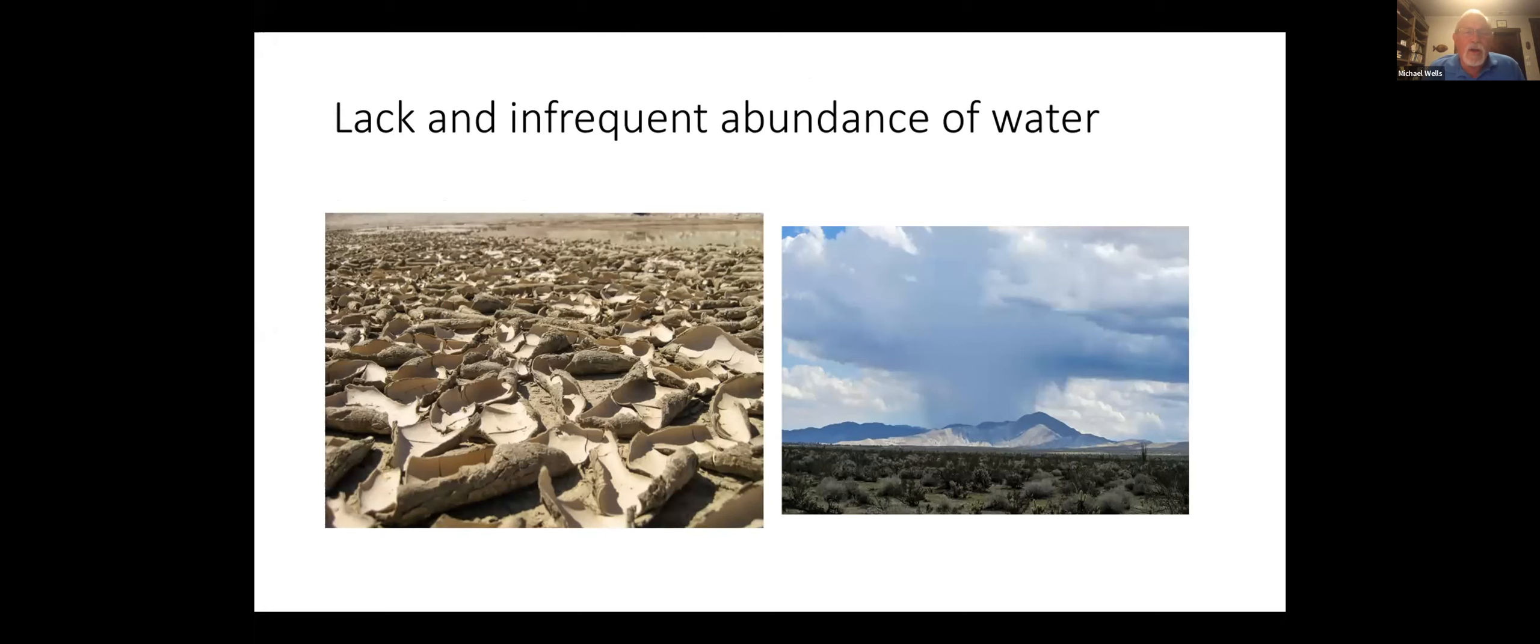Water. Anza-Borrego averages less than about six inches of rainfall over the last 50 years. In the last five years, it's actually averaged less than four inches, so it's in a period of drought. But on occasions, especially during the late summer and early fall when we get monsoonal influences, we can get thunderstorm cells that can drop several inches of water in a relatively confined area in just a few hours' time.